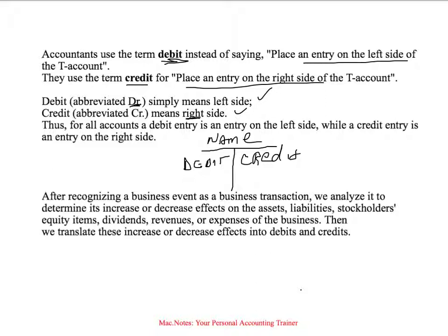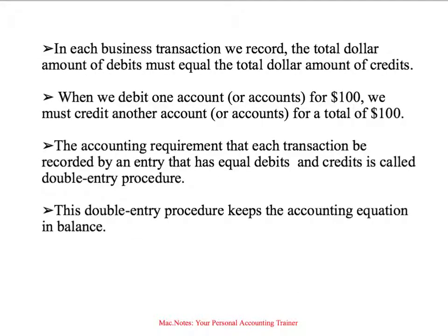For all accounts, a debit entry is an entry made on the left-hand side, and a credit entry is an entry made on the right-hand side. So after we analyze a business transaction and determine the increases or decreases and how those affect the different accounts of the business, we translate the increases and decreases into debits and credits. In each business transaction, the total dollar amount of debits must equal the total dollar amount of credits.